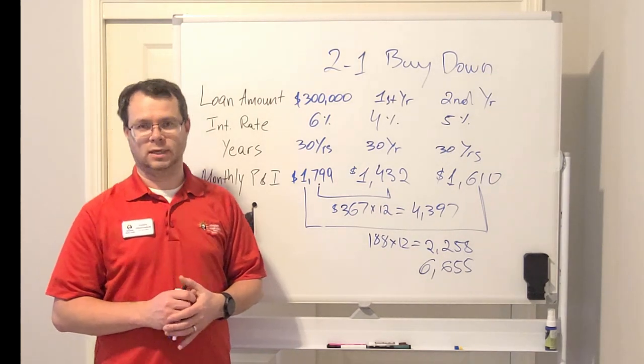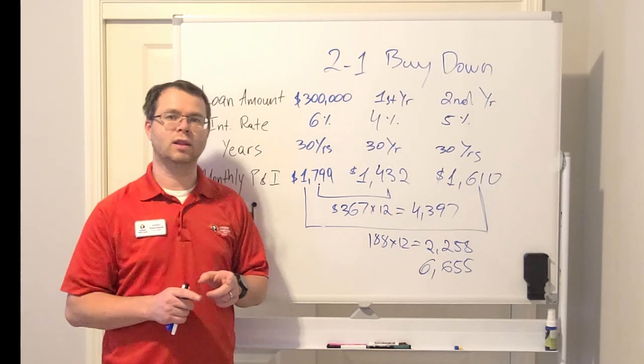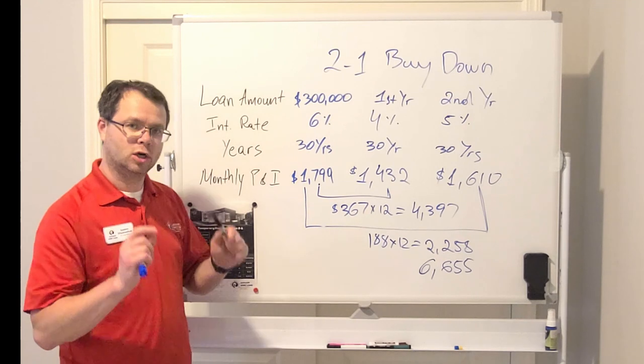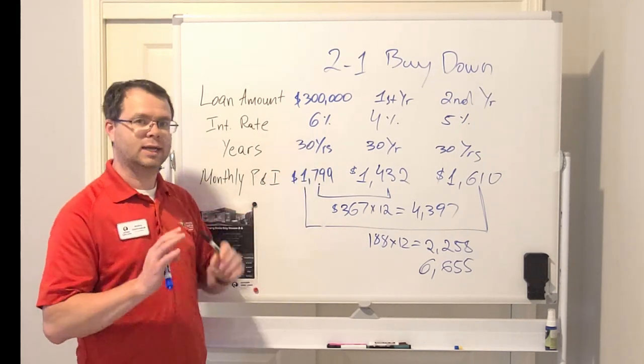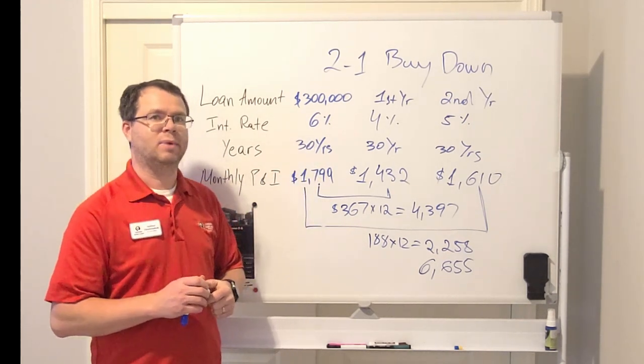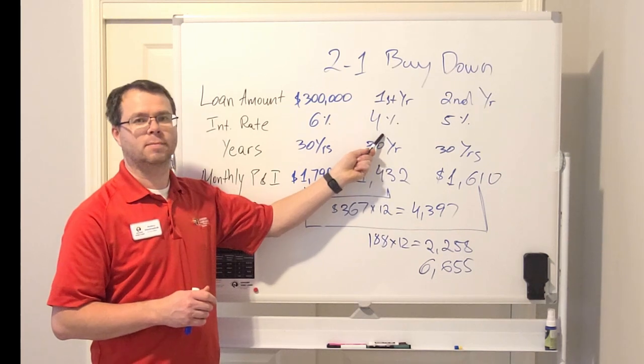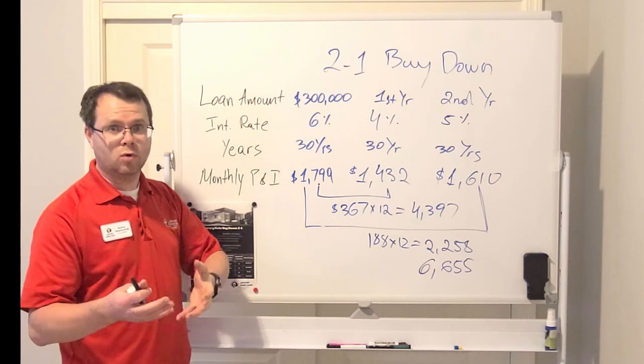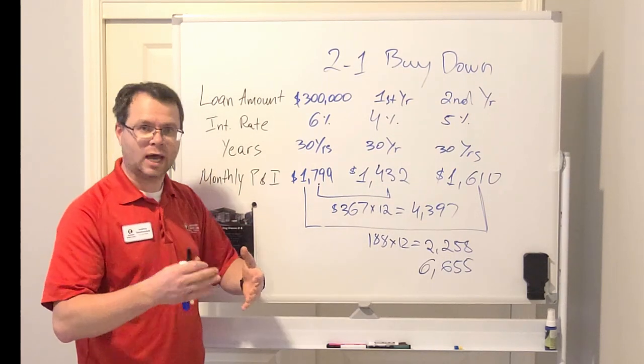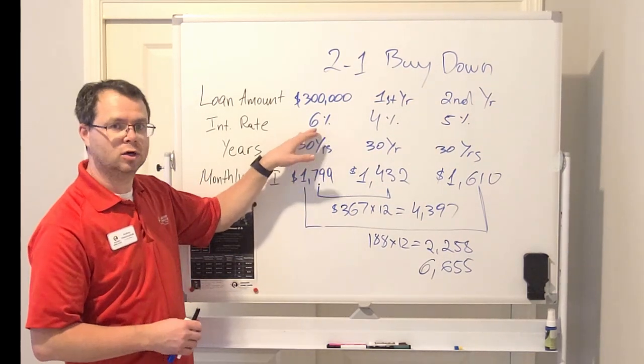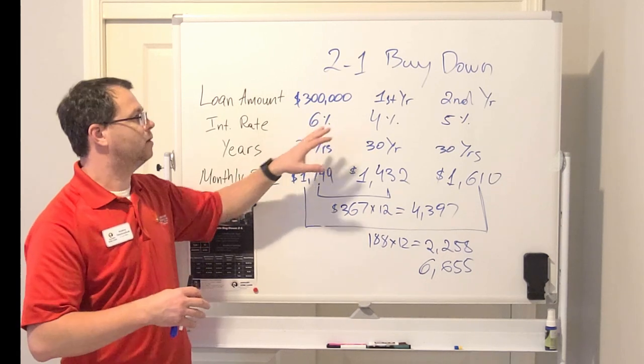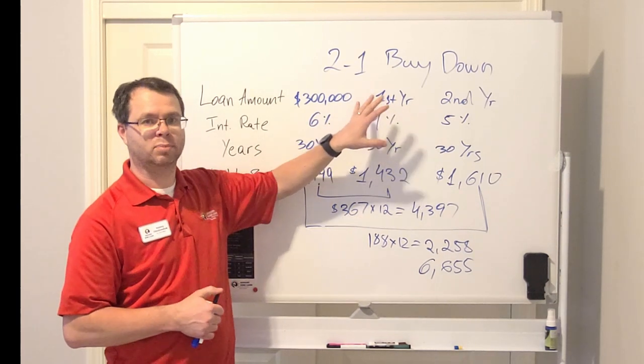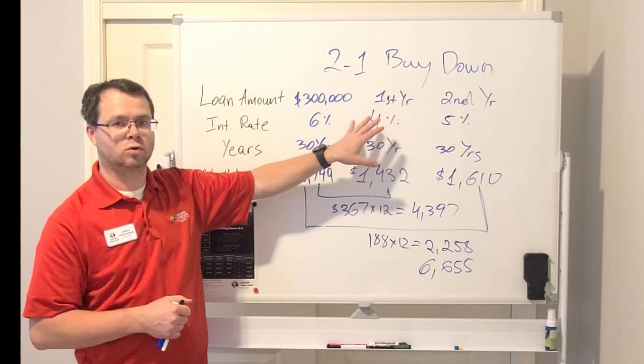One thing I forgot to mention is that you still have to qualify based on your current market rate. You cannot qualify based on a reduced interest rate. These are the guidelines. Based on your credit score, based on the down payment, loan type, you have to qualify at a current rate and then the reduced rate will apply towards your mortgage.